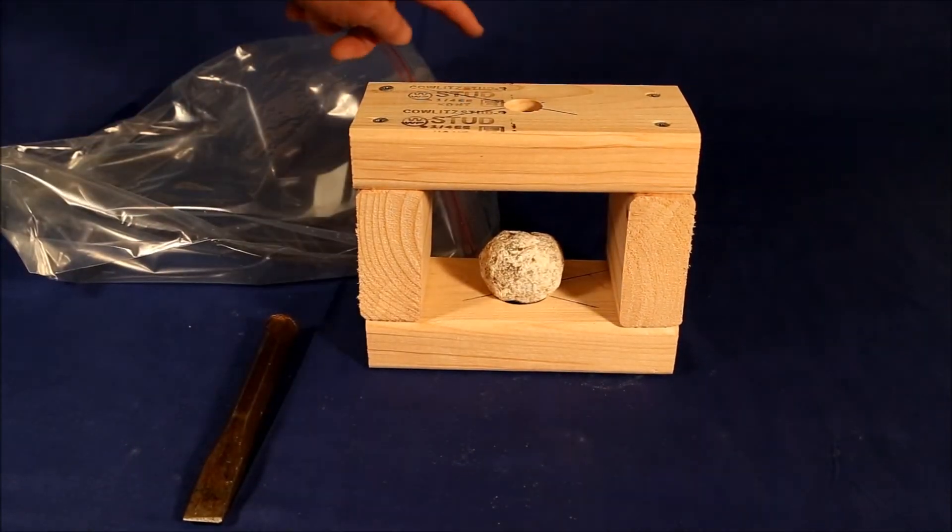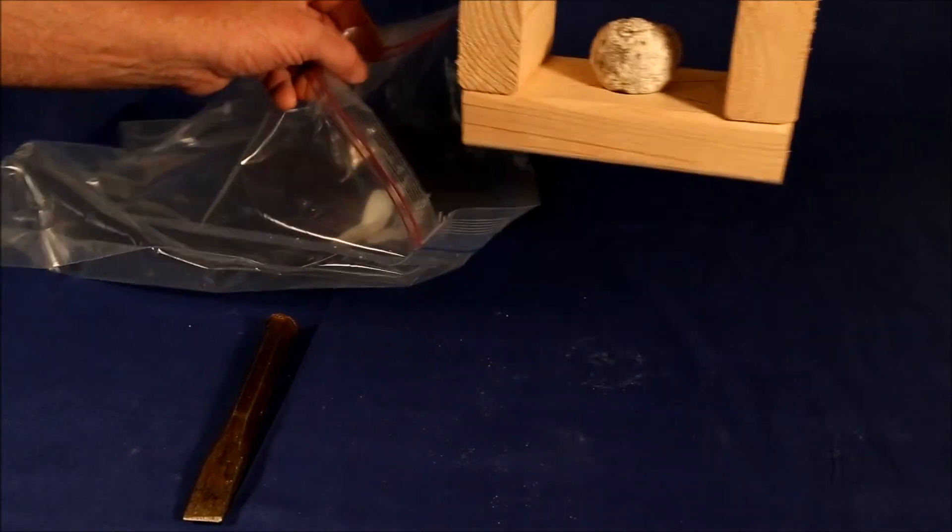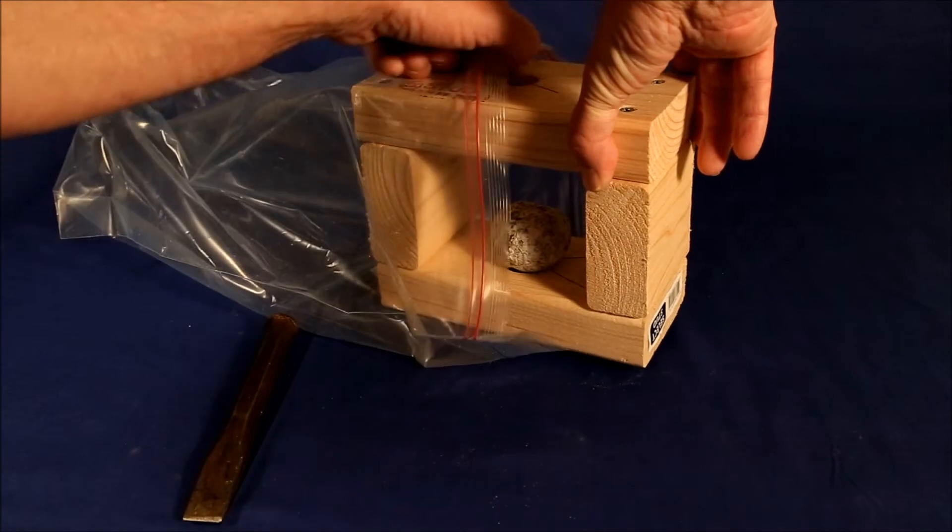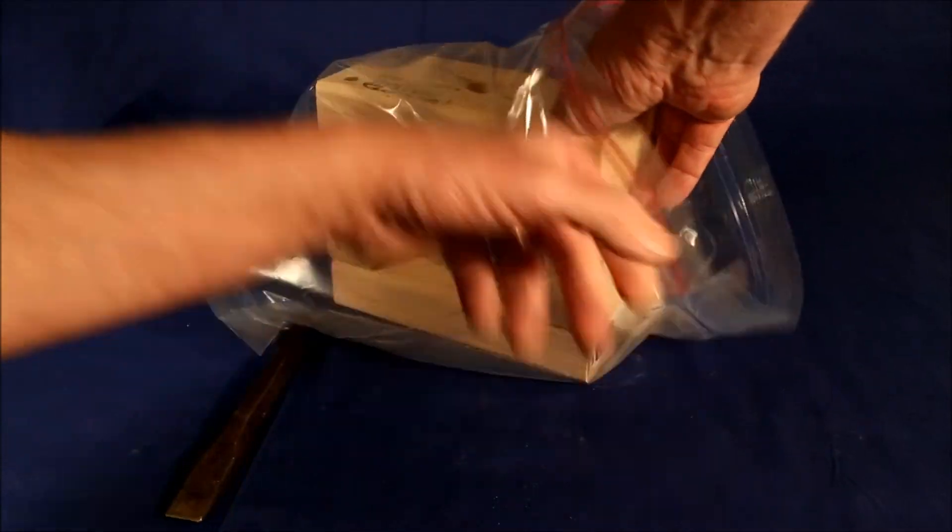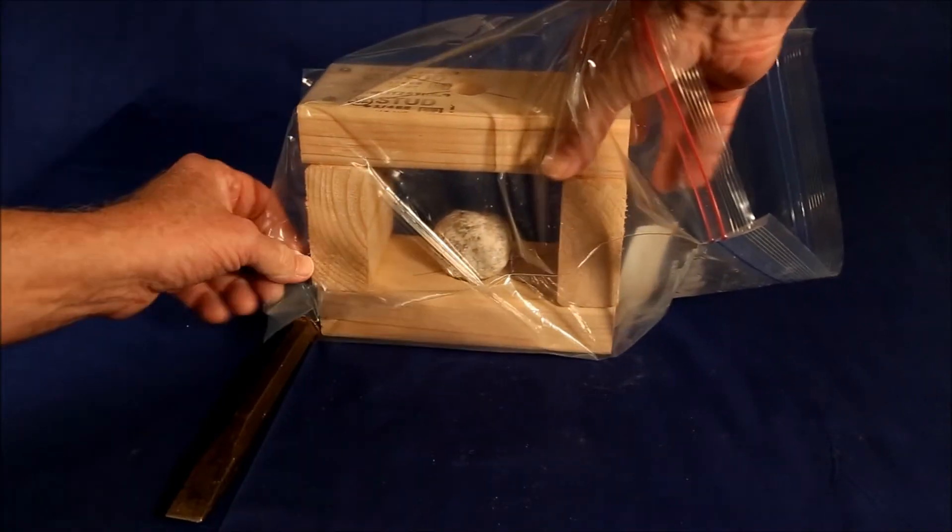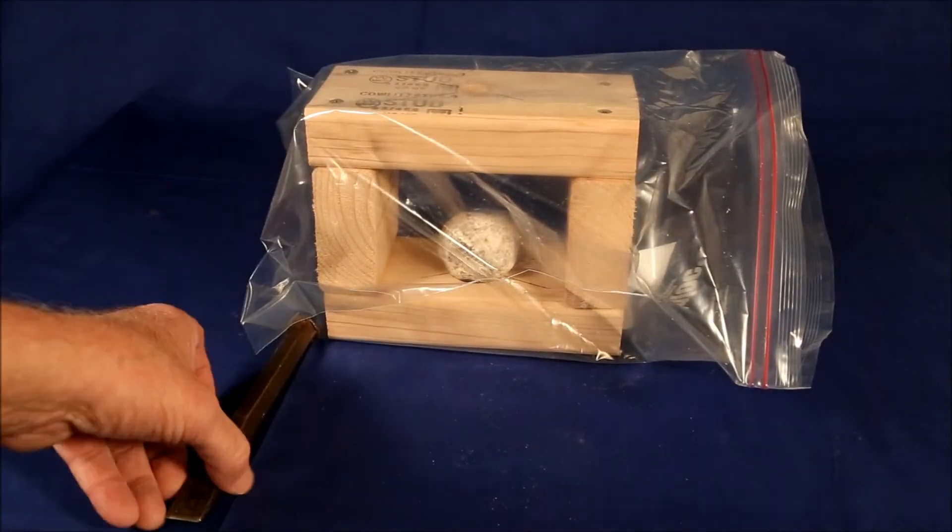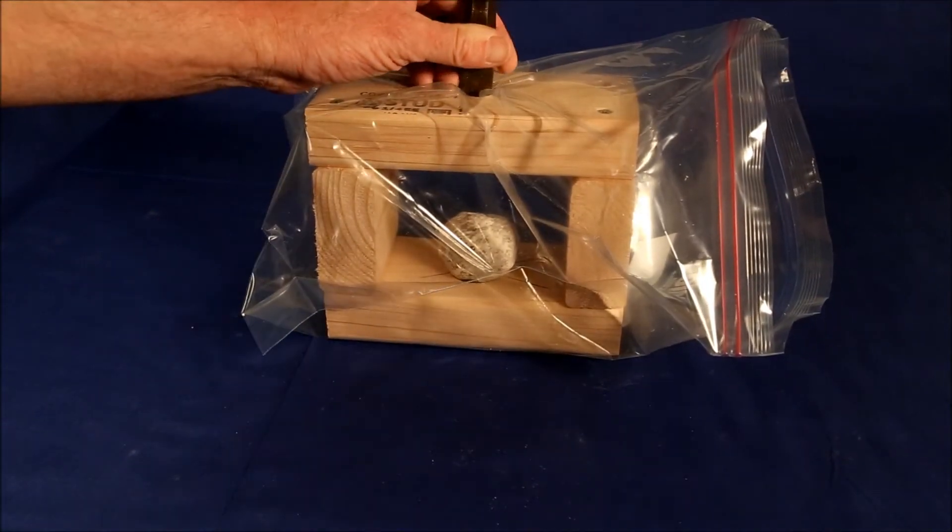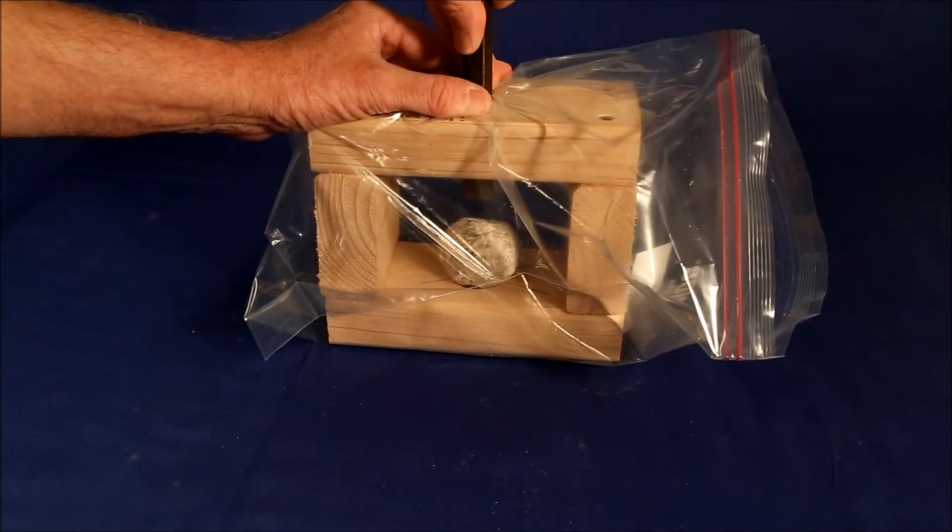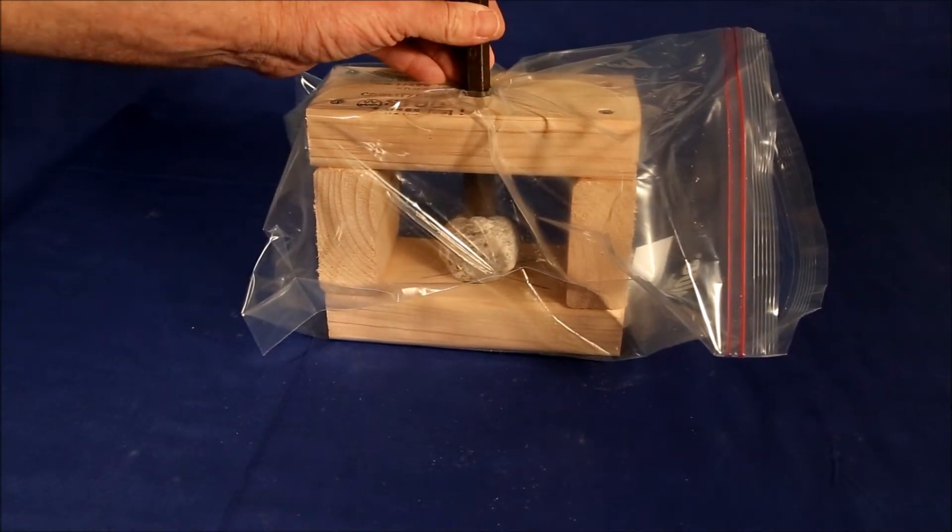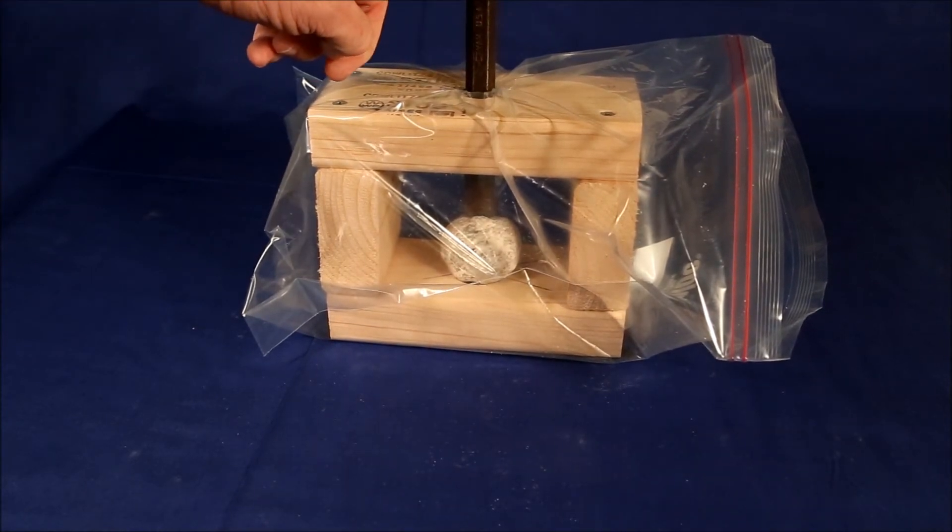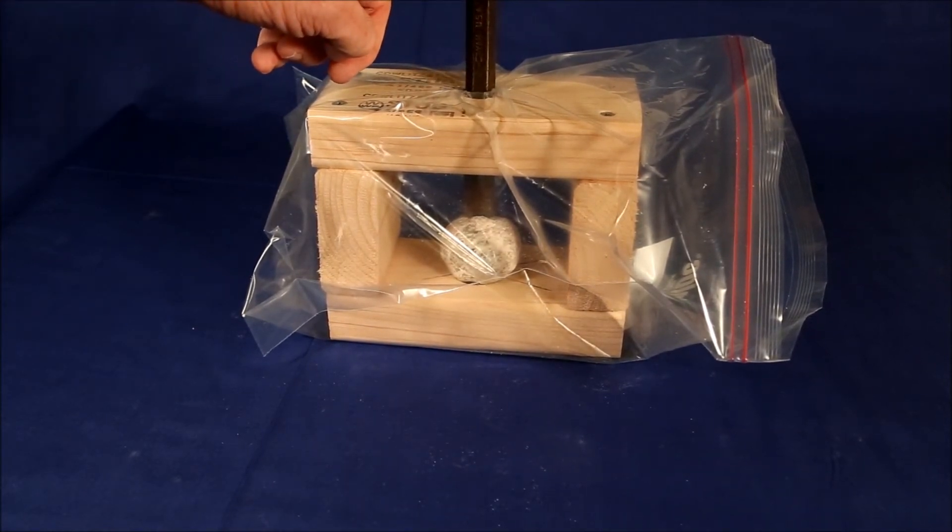Then you place the entire unit into a 2-gallon plastic bag. Close up the end, and then force a chisel down through the hole in the center. And then you use a hammer striking on here to break the geode in half.